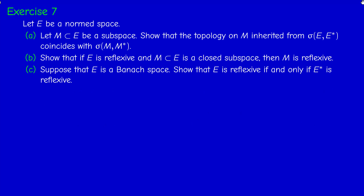So F is reflexive. Now, exercise 7 — we stated part of it in the lectures. We have a normed space E. First question: we have to prove that if we consider a linear subspace M of E, the subspace topology on M inherited from the weak topology of E coincides with the weak topology on M.